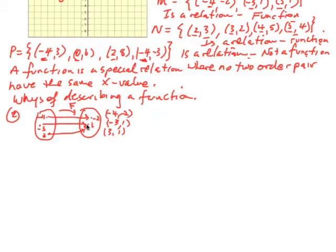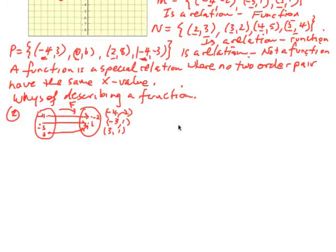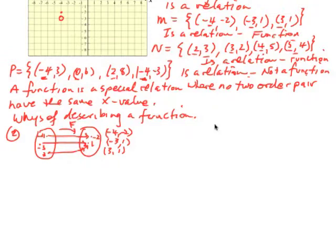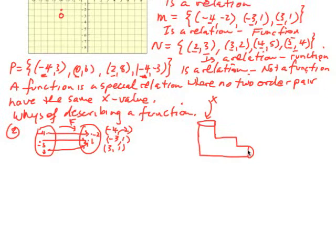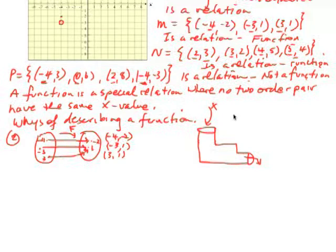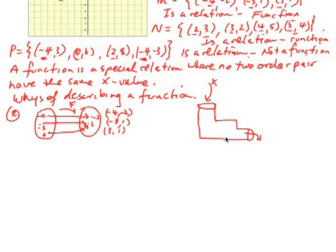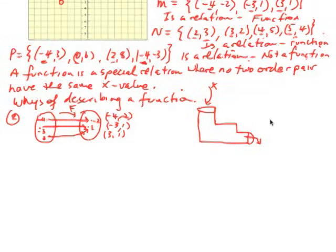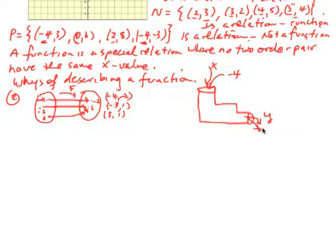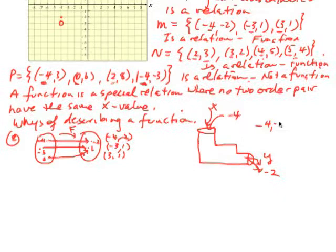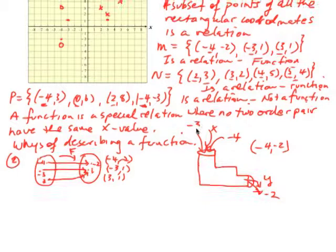Notice that we can have two different x values mapping to the same y — that's okay. Another way is a machine model: we put in an x value, do something to it, and out pops a y value — like a manufacturing machine. For example, if I put in −4, out pops −2, giving the pair (−4, −2). If I put in −3, out comes 1.